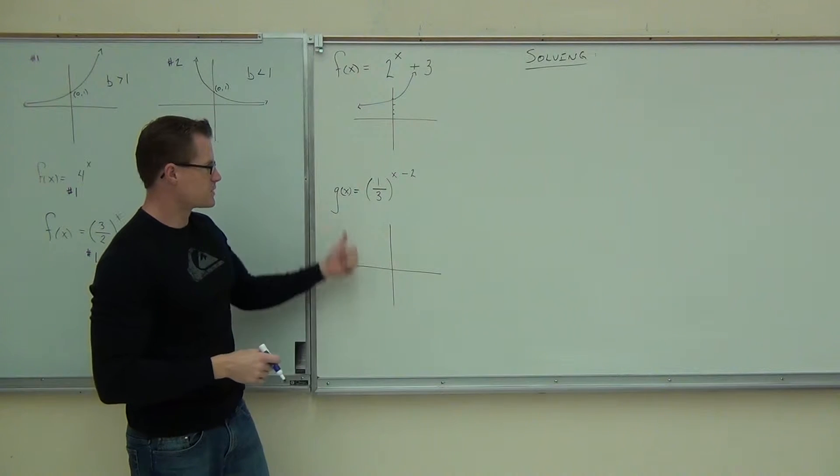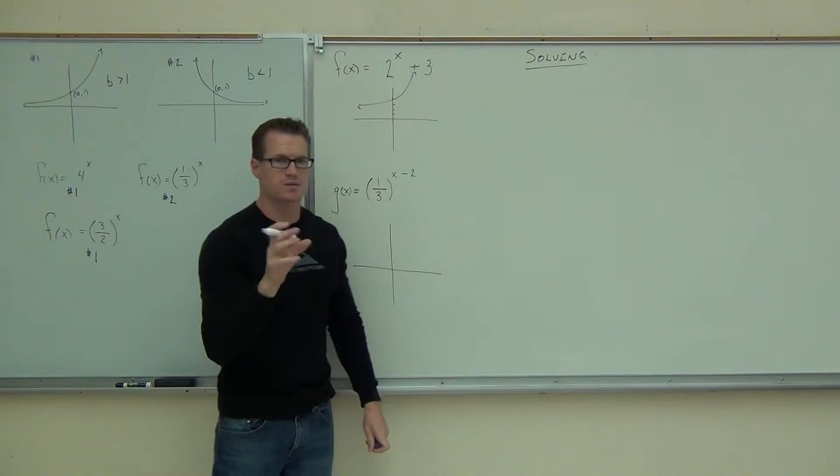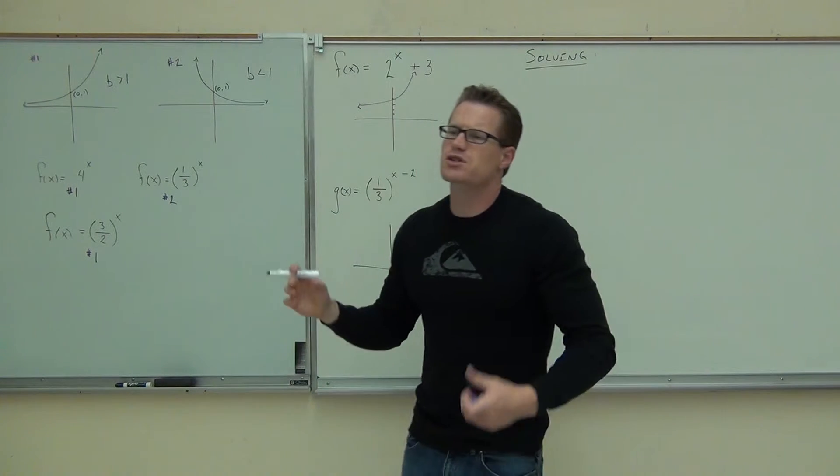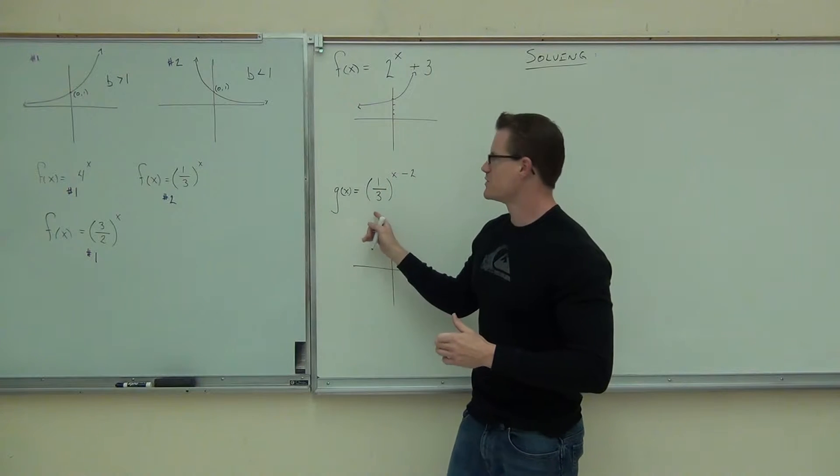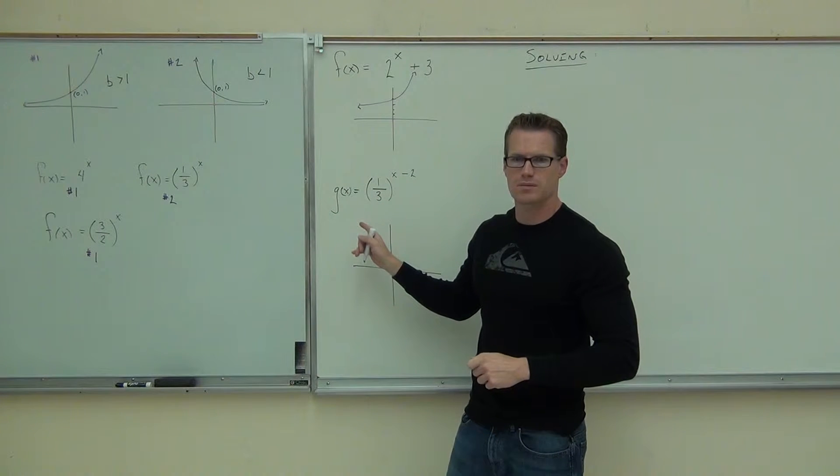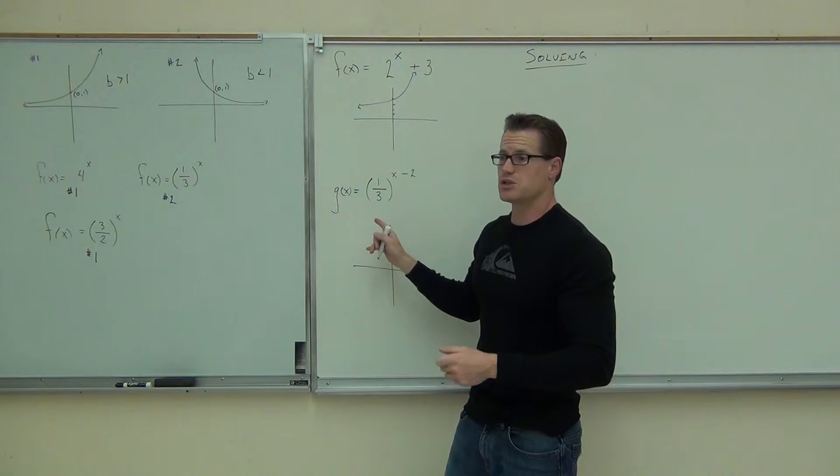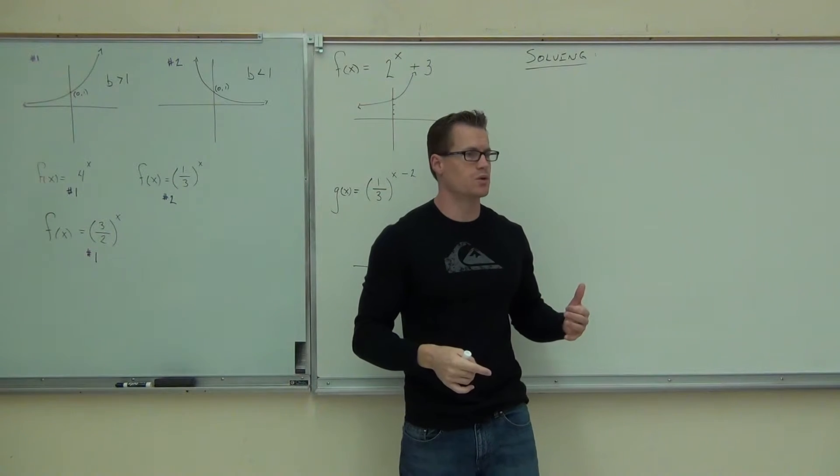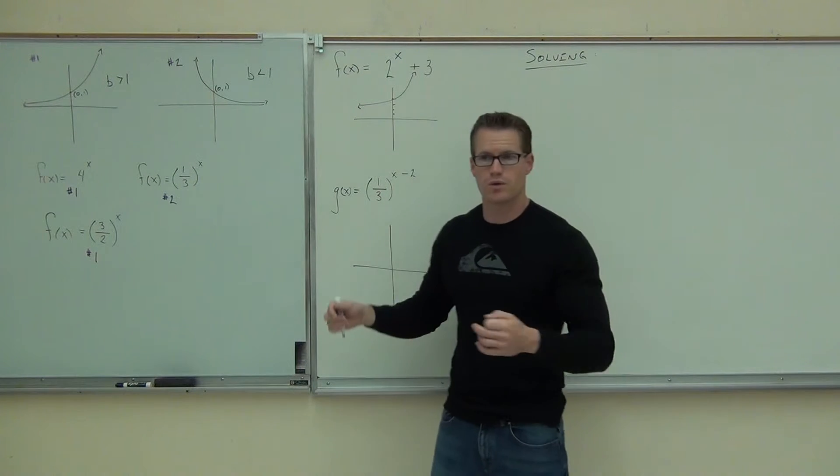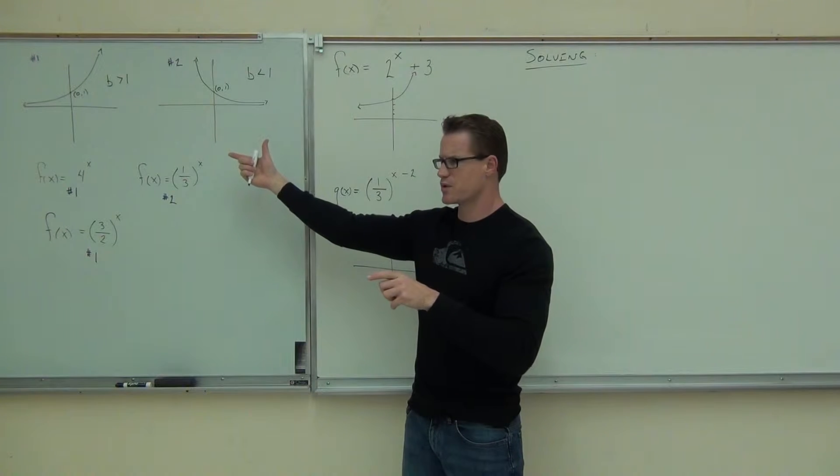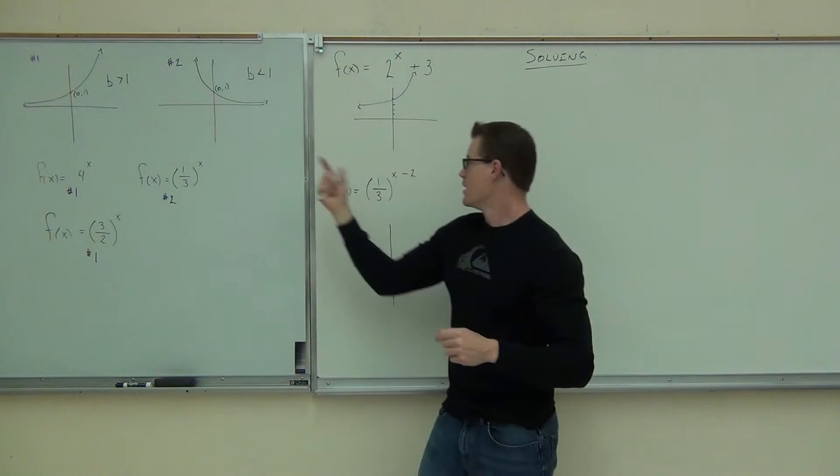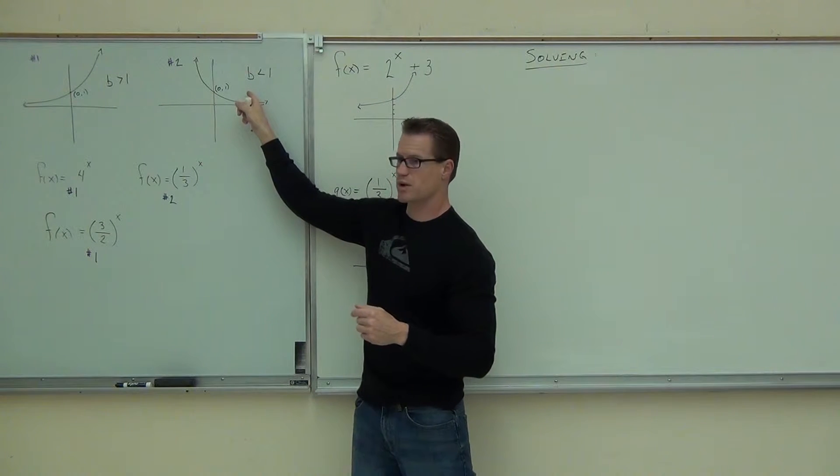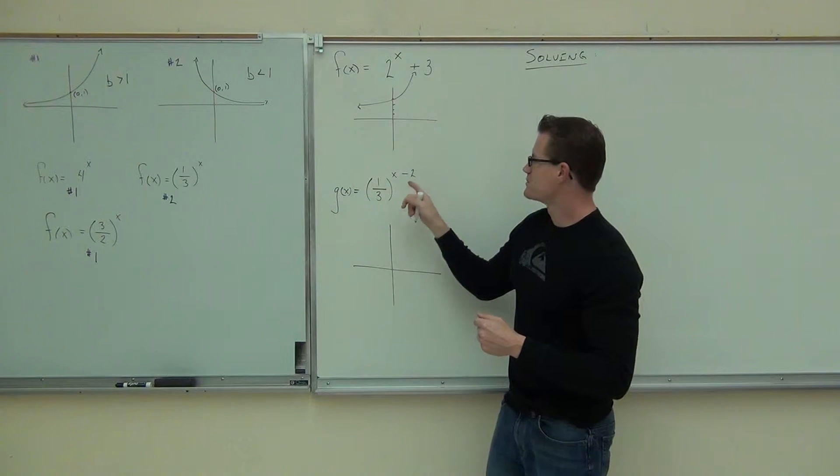Now, the last one, this g of x equals 1/3 to the x minus 2. The first thing I need you to understand is which graph it's most like. Would you say this is most like graph number 1 or graph number 2? Yeah, definitely 2. Why is it most like graph number 2? Less than 1. Okay, great. So you're identifying, you guys sound like you're identifying the shapes pretty well, yes?